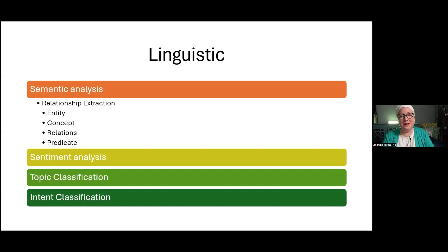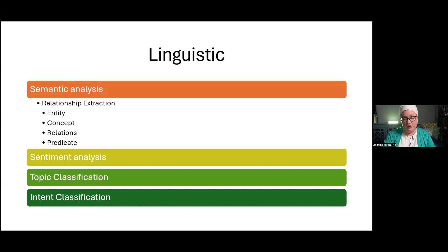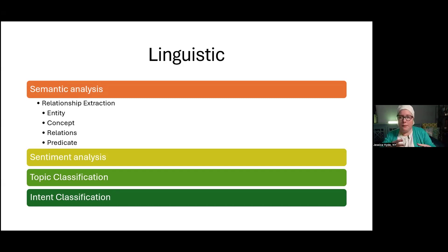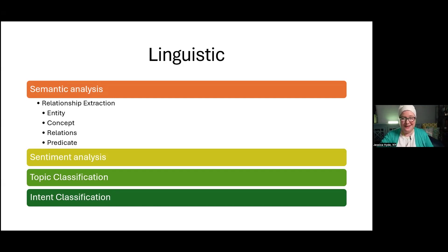Then we have topic categorization — give us all the financial documents, give us all the science-related documents. This can be really helpful in an IP theft case where we can say, give us everything pertaining to sales records or the newest jet being built. And then we have intent classification — was a message an inquiry, a comment, or a complaint? Linguistic categorization can really help us get to the relevant content when we have terabytes and terabytes of data to sift through.